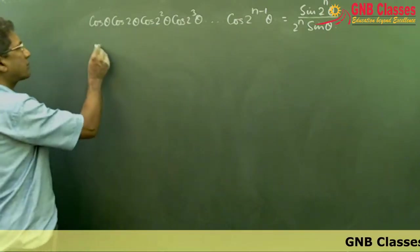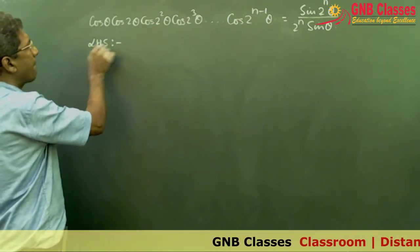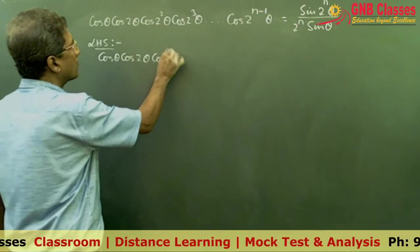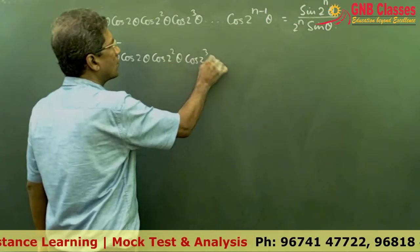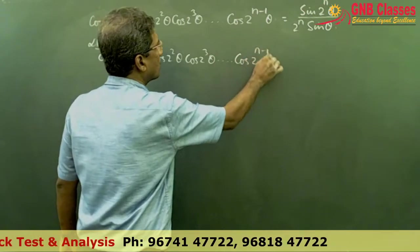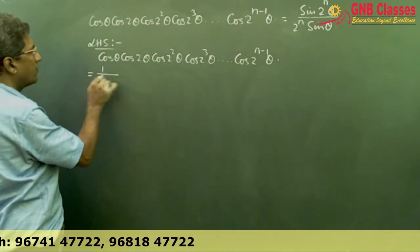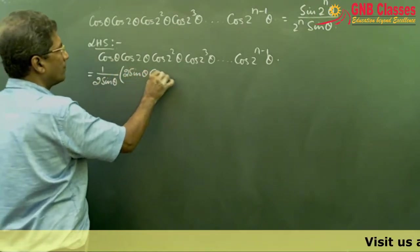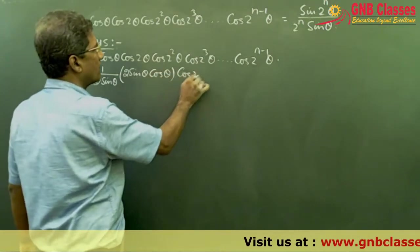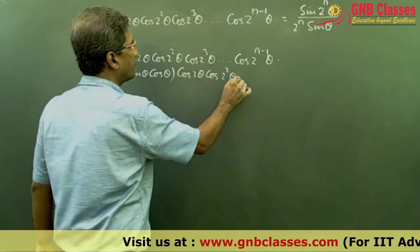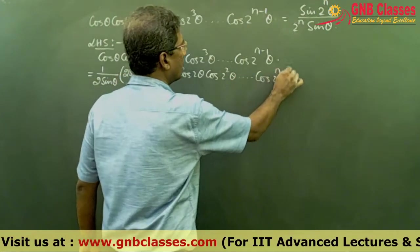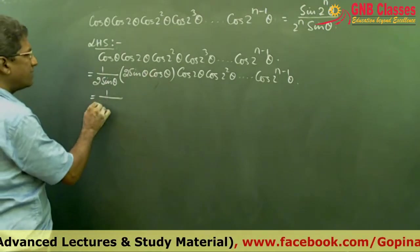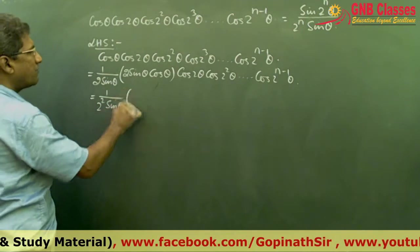Now I will prove this. Taking the left-hand side, I am dividing and multiplying by 2 sin θ. So 2 sin θ · cos θ gives sin 2θ.